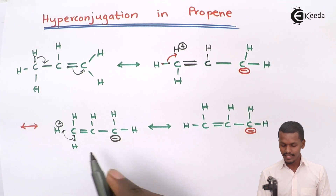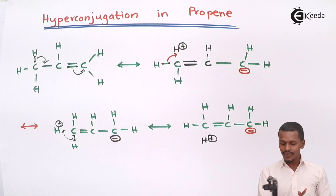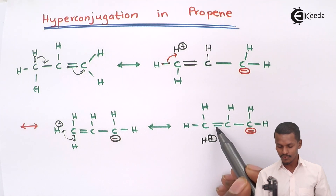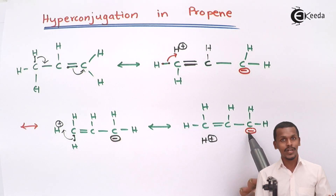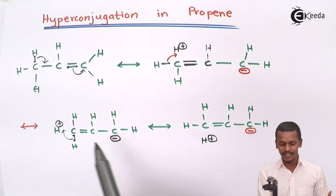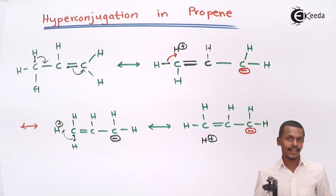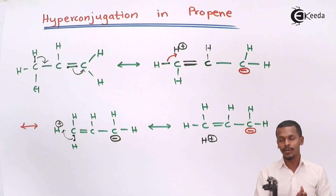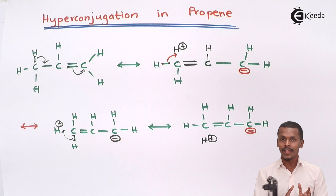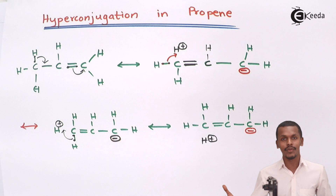This will continue — the positive charge causes the double bond to shift, and again these two electrons on the carbon atom shift to stabilize the positive charge, returning the structure to what it was in the first step. The concept here is that the more delocalization that occurs in a particular molecule, the more stable the molecule is.